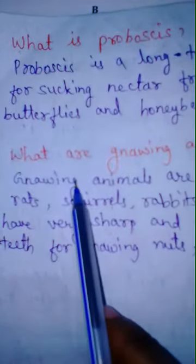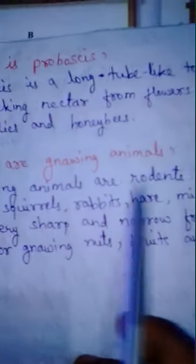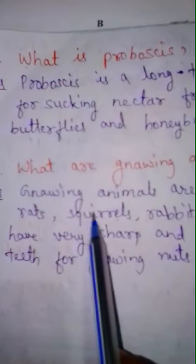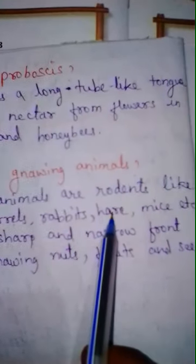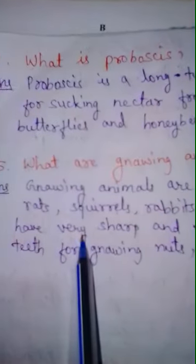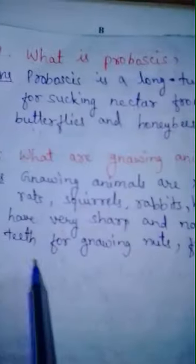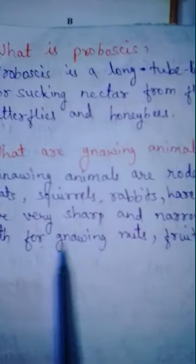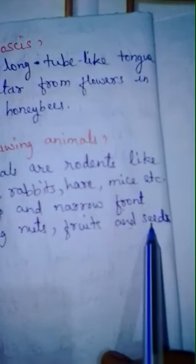Question number 5: What are gnawing animals? Your answer is: Gnawing animals are rodents like rats, squirrels, rabbits, hare, and mice. They have very sharp and narrow front teeth for gnawing nuts, fruits, and seeds.